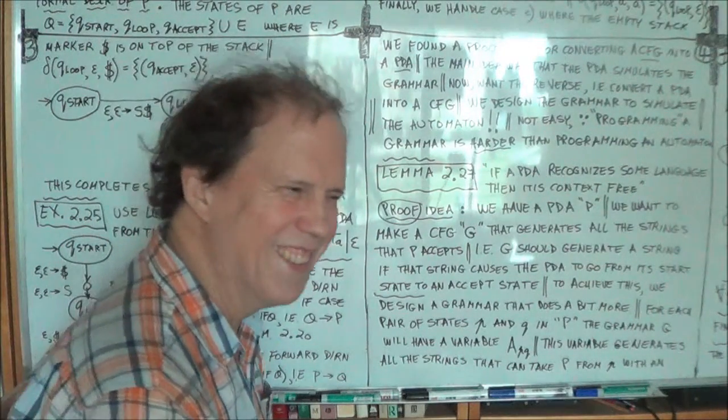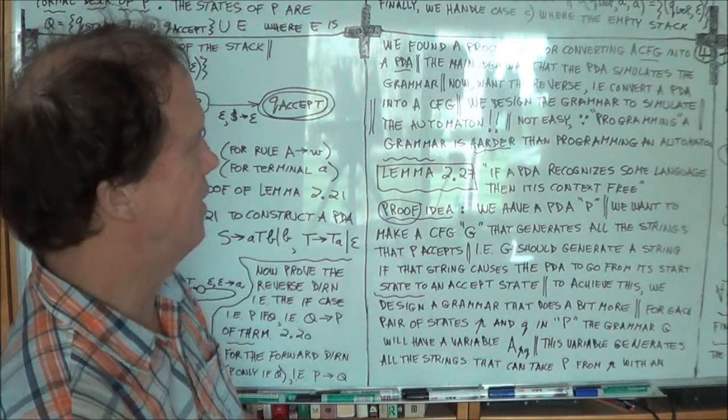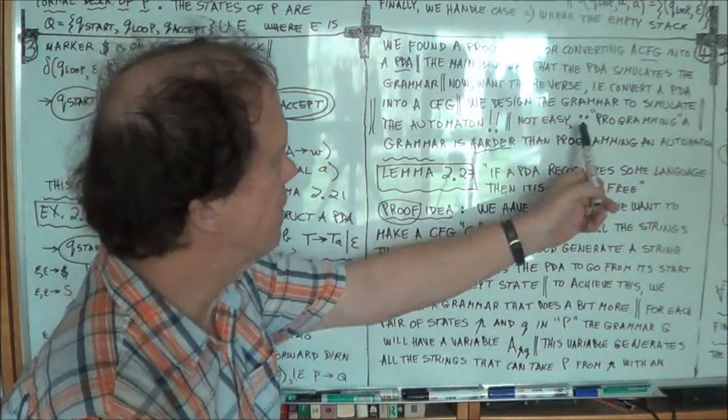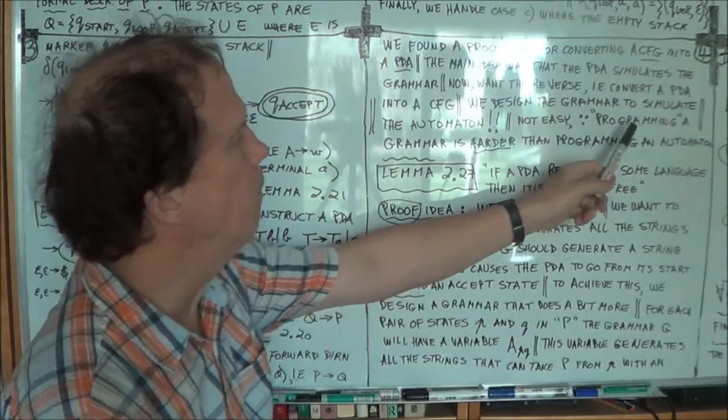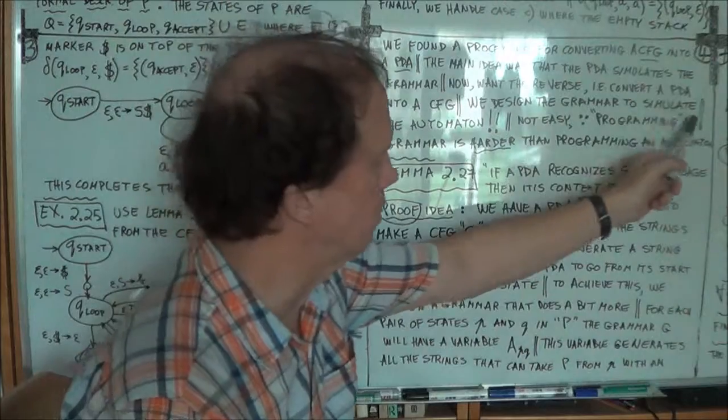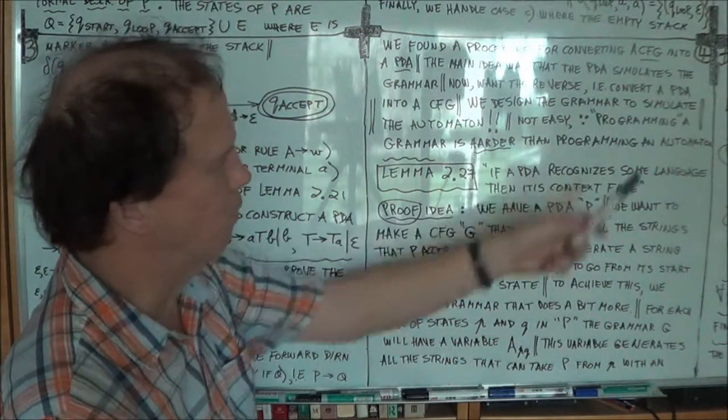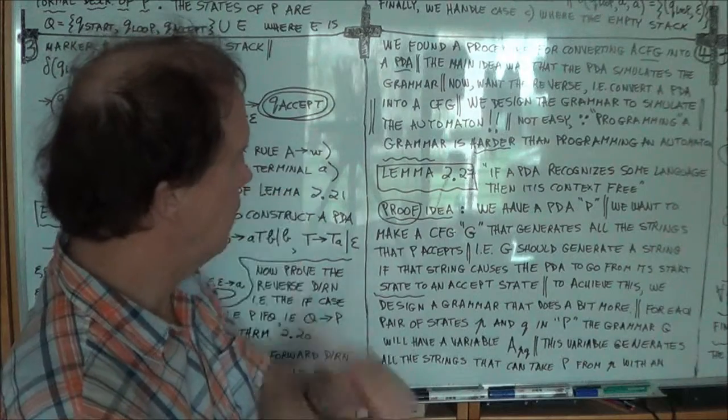That's not obvious, right? So it's definitely harder, right? It's, you know, not easy. Okay? So when you're trying to program in a sense, that's what we put quotes around, trying to program a grammar is harder than programming an automaton. Right?